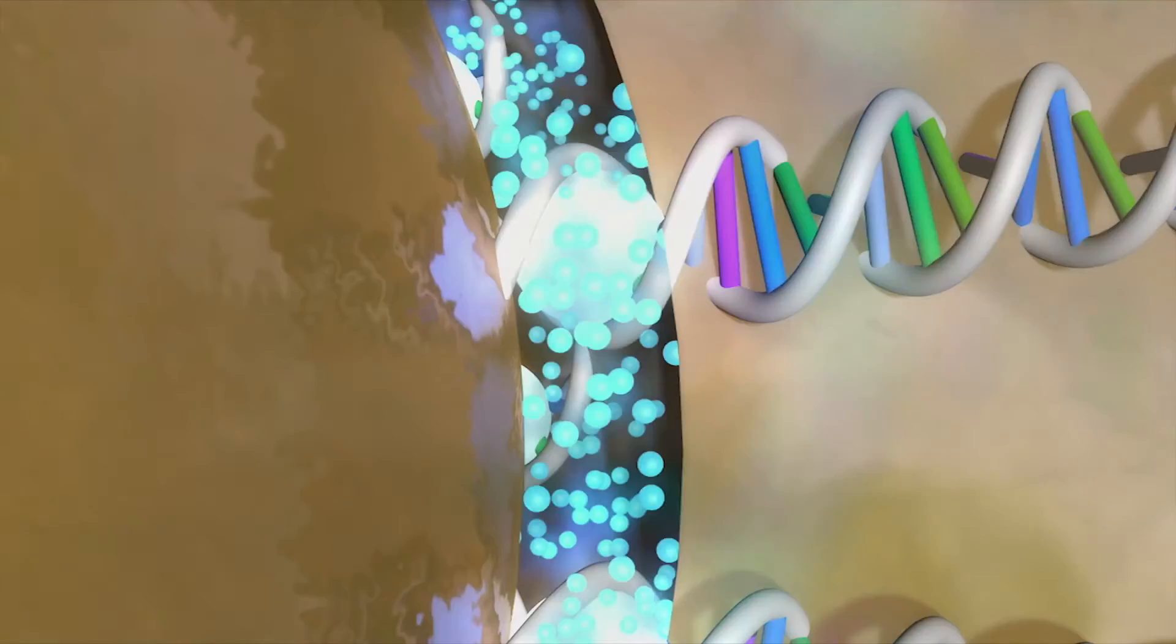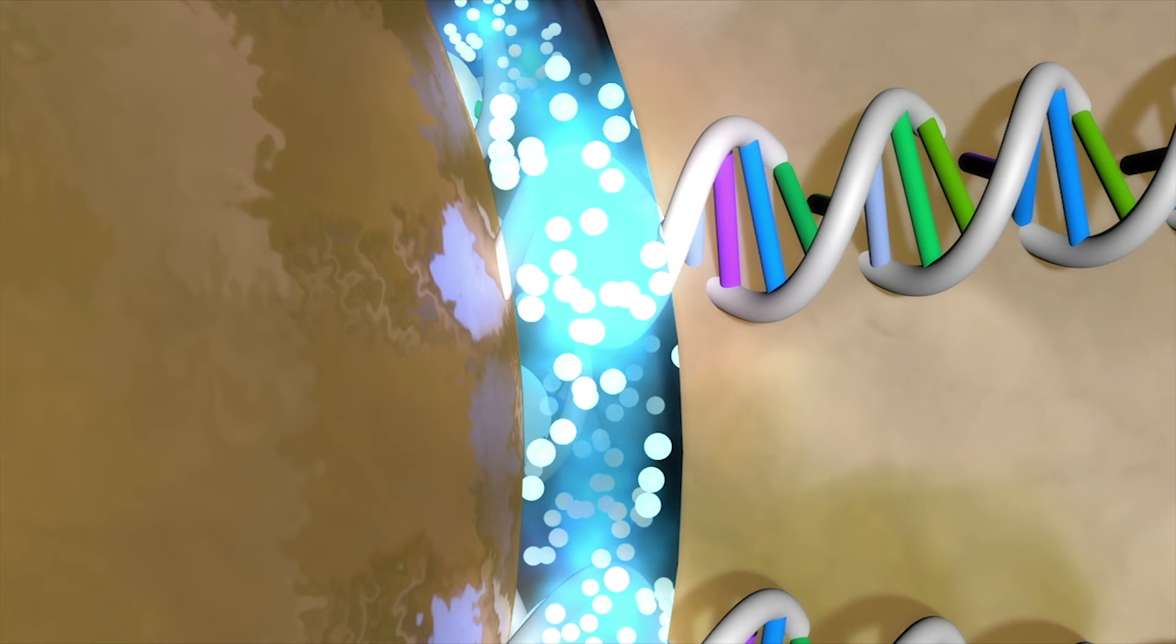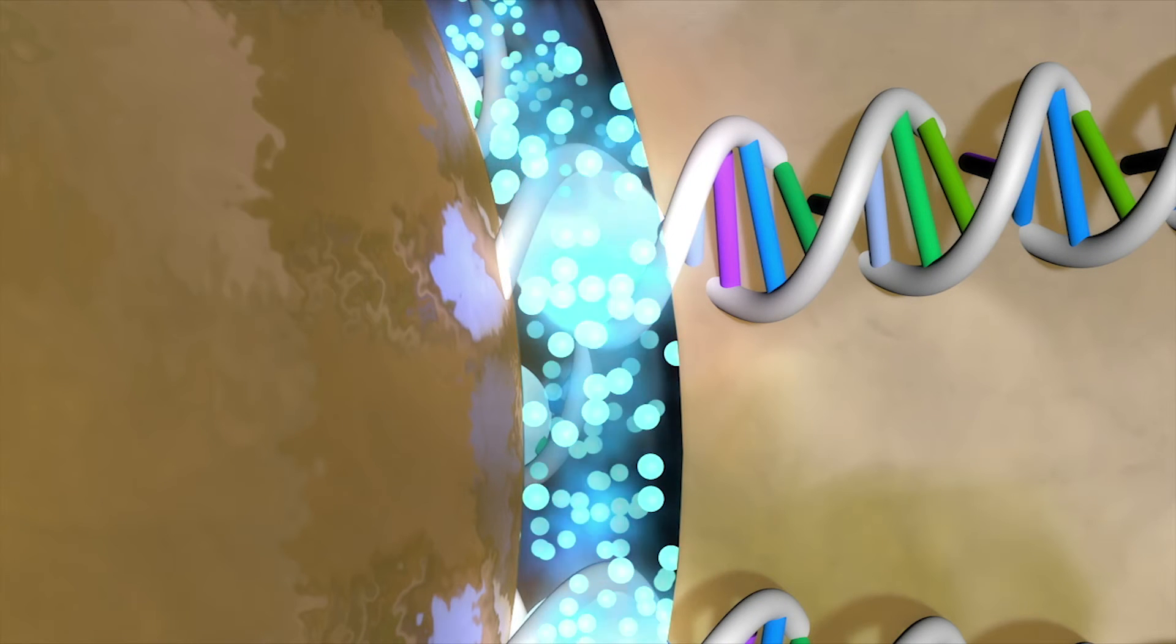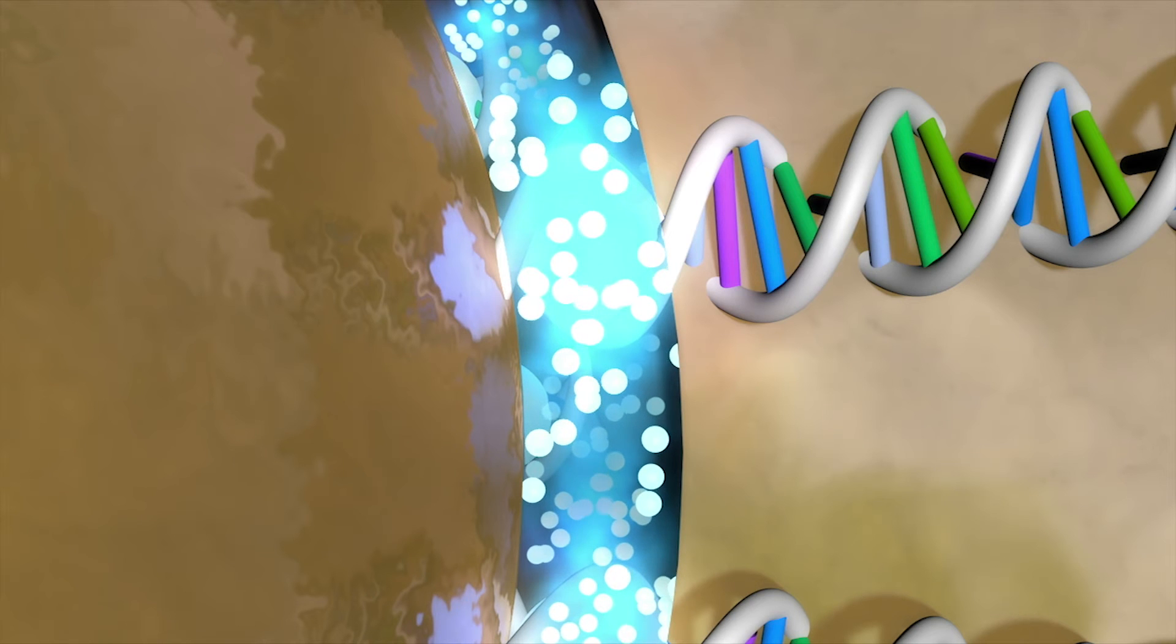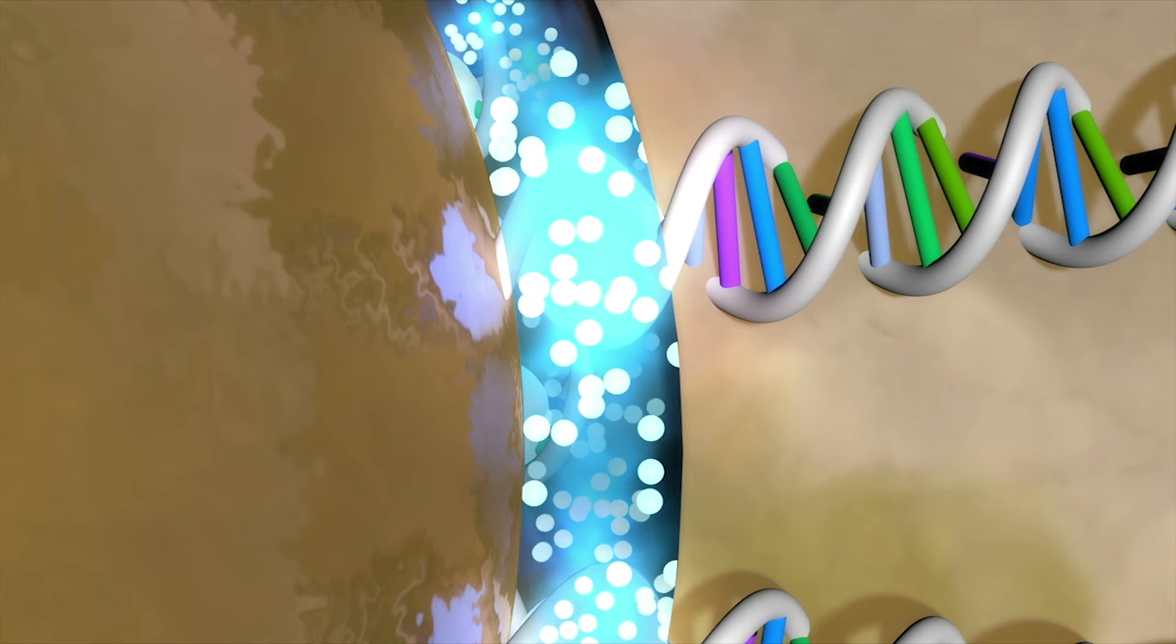This uniform spherical interior nanogap between gold core and gold shell throughout the outer surface of the gold core sphere provides uniform and well-defined nanogap multi-junctions for amplification of SERS signal.